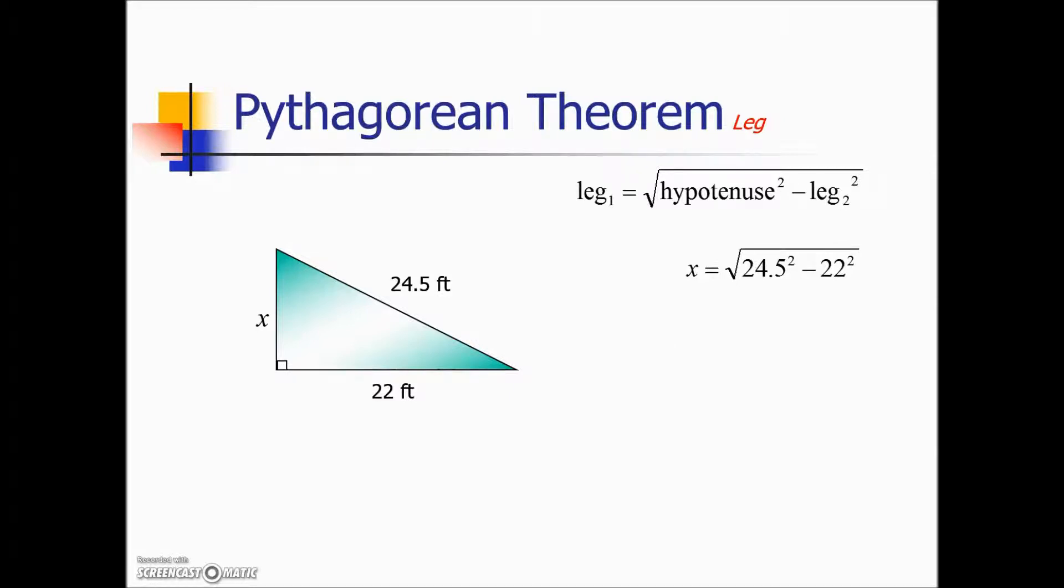So the particulars for this example, you can see the hypotenuse value there squared minus the other leg given. Then complete the subtraction, take the square root, and we now have the measurement of our third side or the second leg in this right triangle.